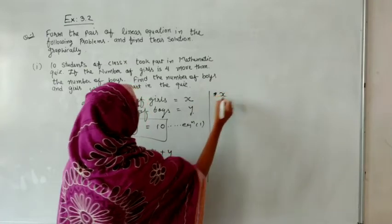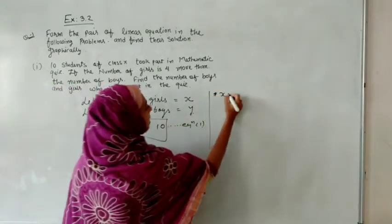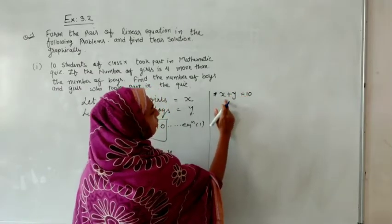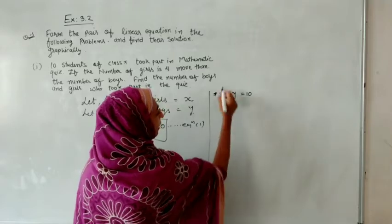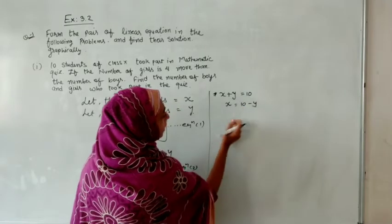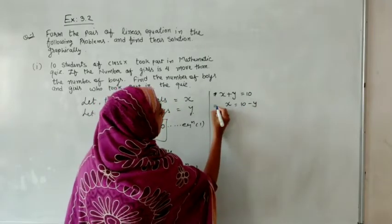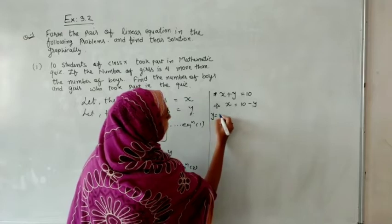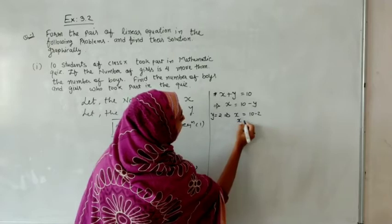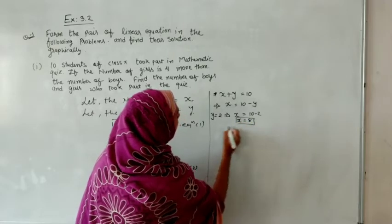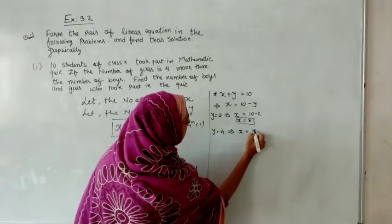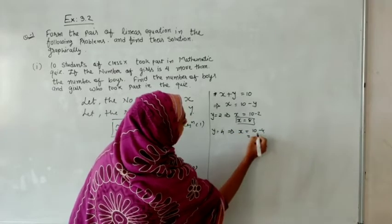Let us take the first equation: x plus y is equal to 10. Let me take one value of y first, then I will get the solution for x. If y equals 2, then x equals 10 minus 2, so x is equal to 8. If y equals 4, then x equals 10 minus 4, so x is equal to 6.